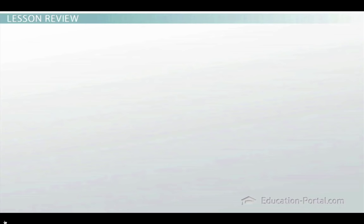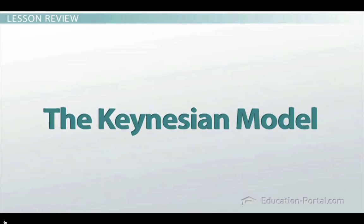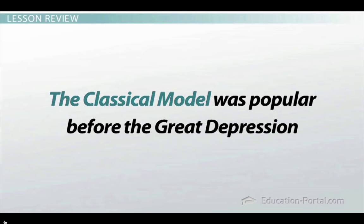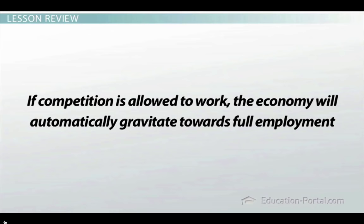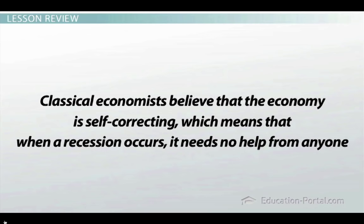Let's review the key points from this lesson. These are the two basic models of the economy: the classical model and the Keynesian model. The classical model was popular before the Great Depression. It says that the economy is very free-flowing and wages and prices freely adjust to the ups and downs of demand over time — in other words, wages and prices are flexible. It also says the economy is always at full employment, what economists call potential output. Classical economists believe that the economy is self-correcting, which means that when a recession occurs, it needs no help from anyone.